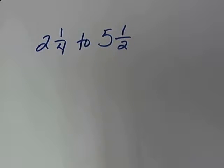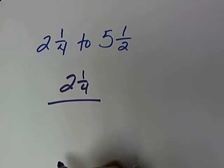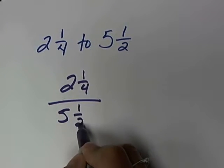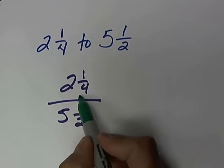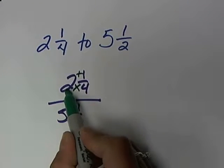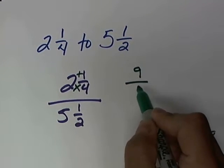The next one is going to include mixed numbers. It's written in word form as 2¼ to 5½. We have to write it as a fraction first — the first number goes on top, so it's 2¼ over 5½. Whenever we are dealing with mixed numbers, the first thing you want to do is convert them to improper fractions. We start on the bottom and do a little multiplication and addition. So it's 4 times 2, which is 8, then plus 1 is 9. So 2¼ becomes 9⁄4.